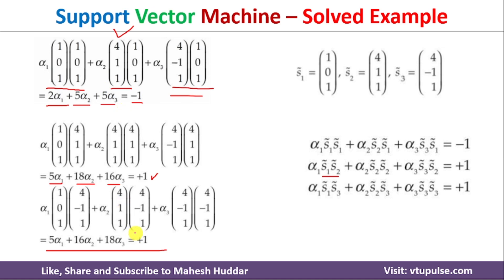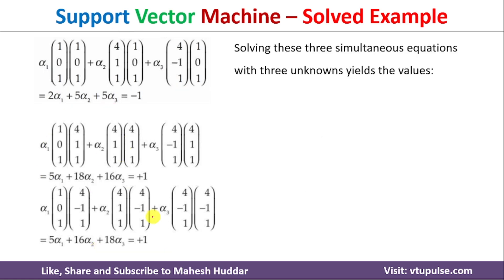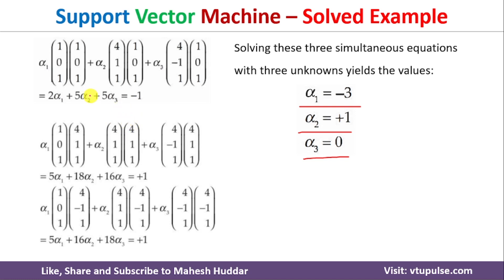Now we have three equations with three unknown values: α1, α2, and α3. Using these three simultaneous equations, we can easily find the coefficients. We can use a calculator or solve directly. Solving the three simultaneous equations gives: α1 = -3, α2 = +1, α3 = 0.